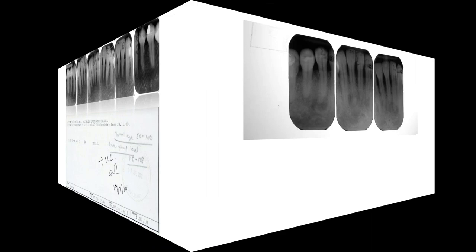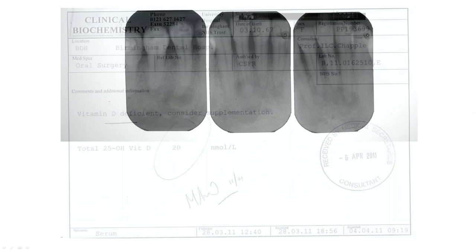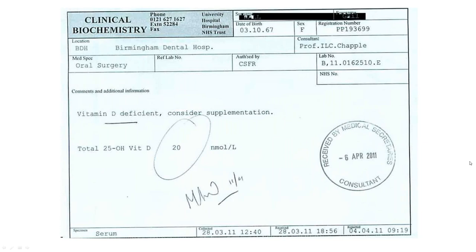A different patient, an older lady, presenting with radiolucencies that look like periapical cemental dysplasia. Her vitamin D levels were also extremely low. We actually published a case series hypothesising that periapical cemental dysplasia, which classically presents in Afro-Caribbean patients over 50 approaching or going through menopause — somewhat osteoporotic and not getting much daylight — might actually just be vitamin D deficiency, given the demographic. Whether that's true or not I have no idea, but it was published in the Journal of Periodontology.